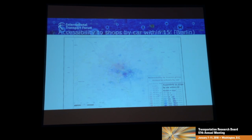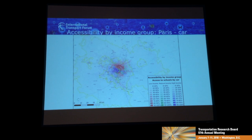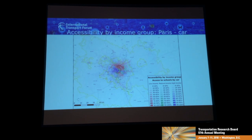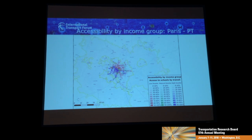I think you can get additional insights if you combine this accessibility data with other socioeconomic indicators. Here we've looked at accessibility by income group in Paris — to schools in this case. You can see the red areas are the low-income areas in northern Paris, and the strong blue ones are the high-income areas in the south. When you look at the accessibility by public transit in the same city, you can actually see how a lot of the public transit is favoring the high-income core city where a lot of high-income people are living.